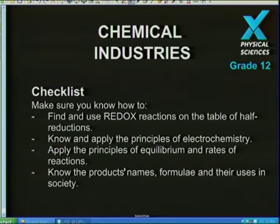There are some very important skills you'll need before you even get started with chemical industries. The first one is finding and using redox reactions on the table of half reductions. This reduction potentials table is absolutely important for you to know. Whether it's chloralkali or batteries, you've got to know and apply the principles of electrochemistry. You need to know what an anode and a cathode are, be able to calculate cell potential, and tell me if it's endo or exothermic. This is all background you should know before you even get started.